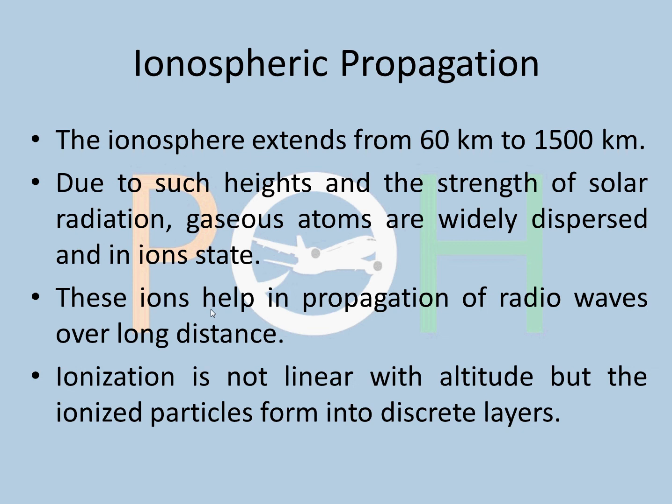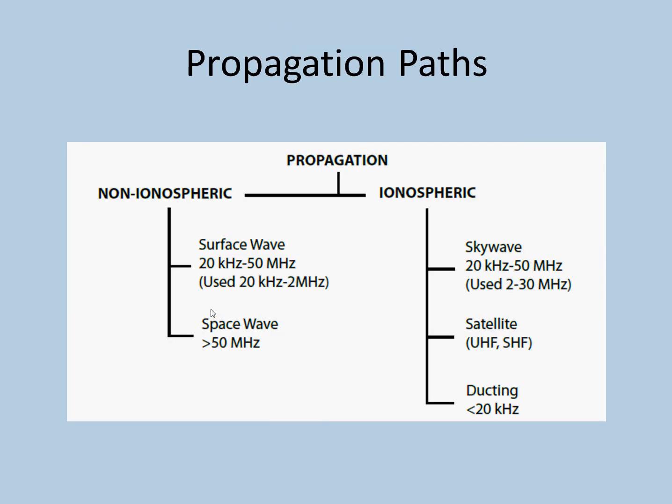There's something called ducting that I had mentioned. Ducting is a phenomenon that is related to VLF, very low frequency. This happens at low frequency where the surface of the earth and the lower edge of the ionosphere act as a waveguide, and this actually channels the radio wave around the earth with very little loss of power. This is called ducting. But there are no civilian equipments in the VLF band, so I don't think it's important to discuss ducting. But you should just know that it happens in the VLF and it can actually circumnavigate the whole planet. That's about ducting. Satellite is something we will discuss in a different module altogether.